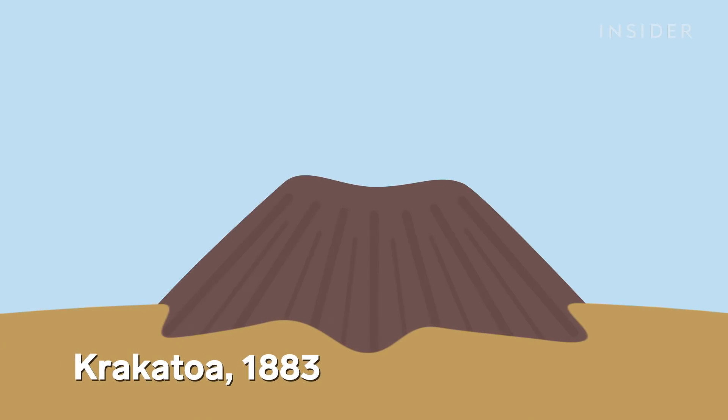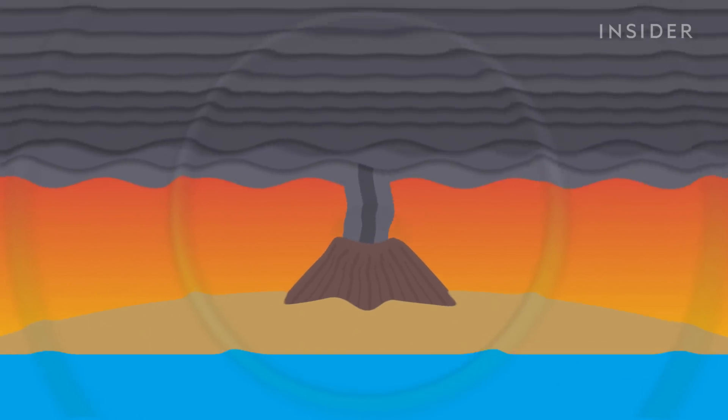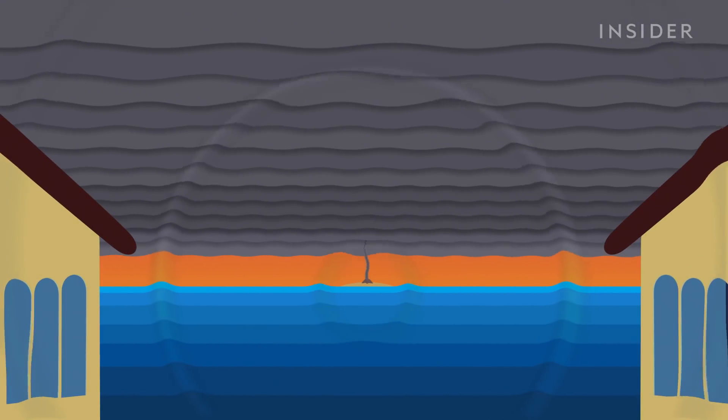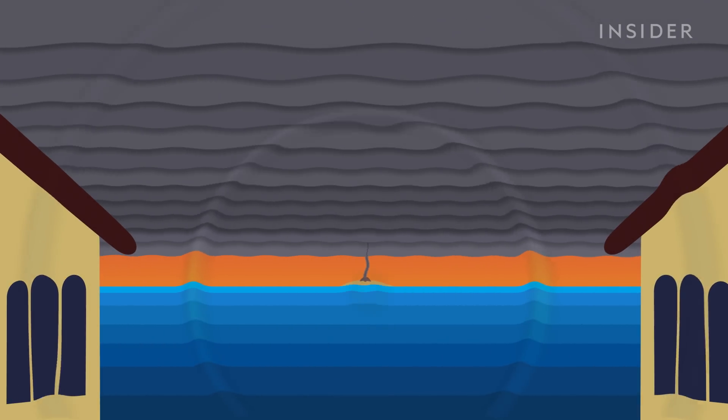When Krakatoa, which wasn't even close to the size of a supervolcano, erupted in 1883, it released a roar so loud the sound traveled nearly 4,800 kilometers across the Indian Ocean, shattering windows and deafening people in its path.